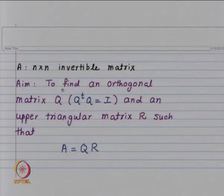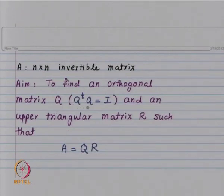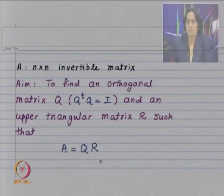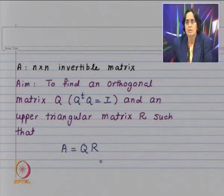We have A to be an invertible matrix of size n, and our aim is to find an orthogonal matrix Q — that means a matrix which satisfies Q-transpose Q equals identity — and an upper triangular matrix R such that A equals Q times R. We are going to achieve this using reflectors.